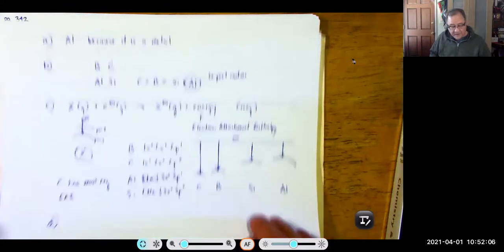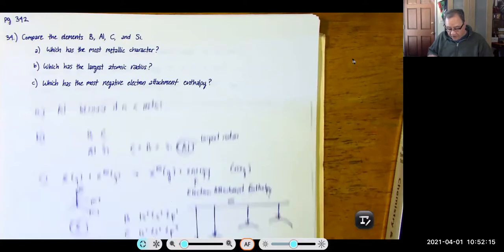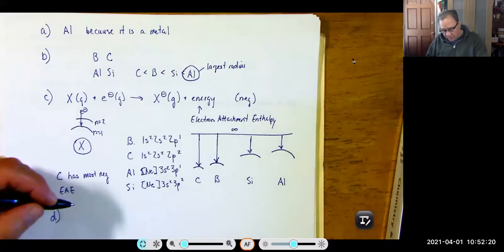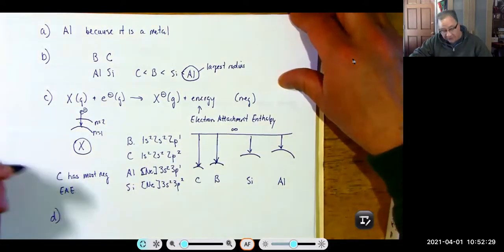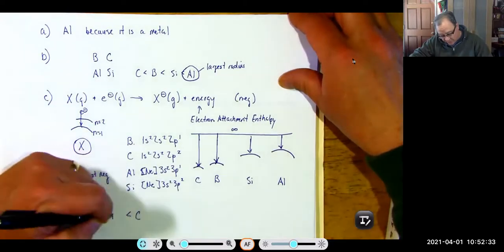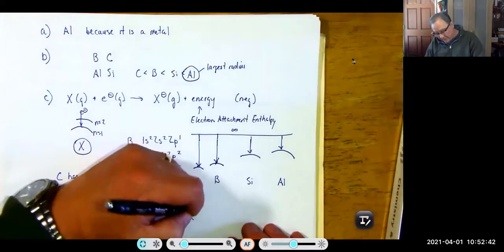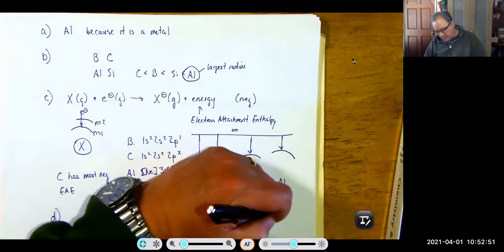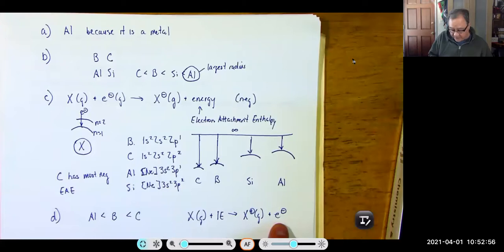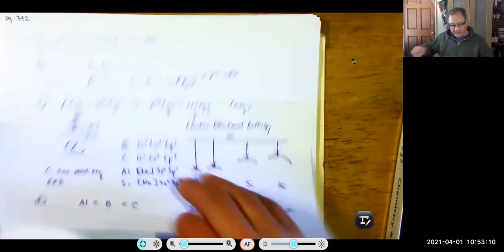Part D: place boron, aluminum, and carbon in order of increasing first ionization energy. For ionization energy, the closer the electron is to the nucleus, the harder it is to remove. Carbon has the most protons (6), so its electron is hardest to remove; then boron (5); then aluminum (third period, electron farther out). Order of increasing IE: aluminum < boron < carbon.